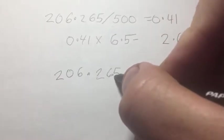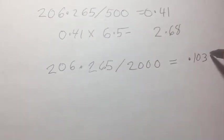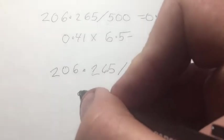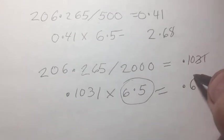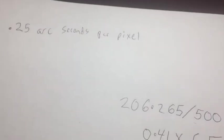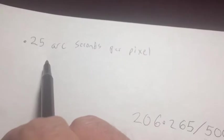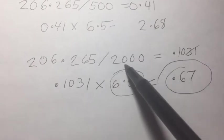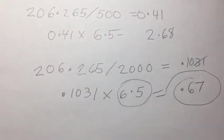Now let's see what happens if I take 206.265 divided by 2,000 — that gives me 0.1031, or just 0.1. Take that number, multiply by 6.5, and that equals 0.67. This number is below 1 and fairly close to 0.25, which is ideal on a night of good seeing. So to get optimal resolution, I'm going to be somewhere around a 2,000 millimeter focal length using the Canon 6D at prime focus.